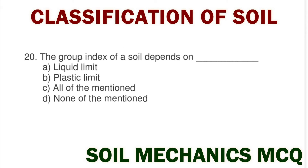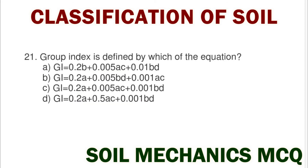Next question: the group index of the soil depends on option A liquid limit, option B plastic limit, option C all of mentioned, option D none of mentioned. The correct answer is option A liquid limit.